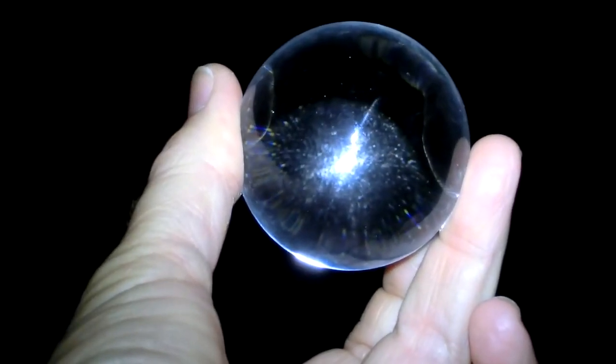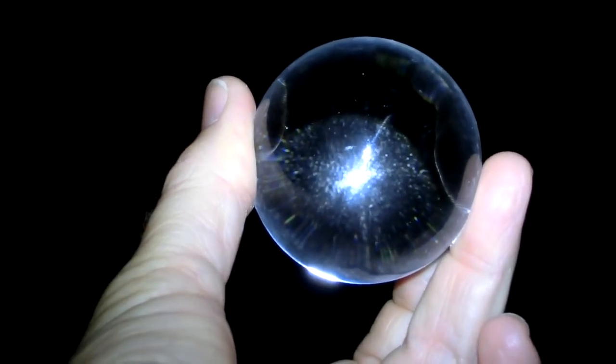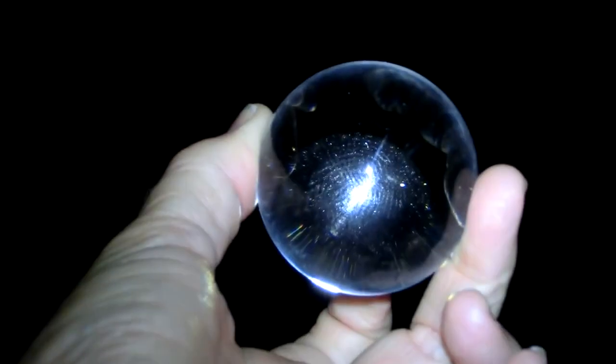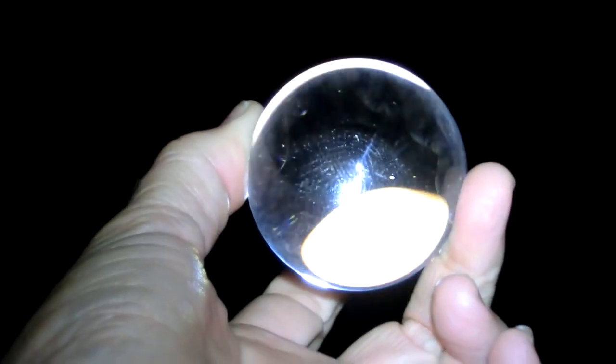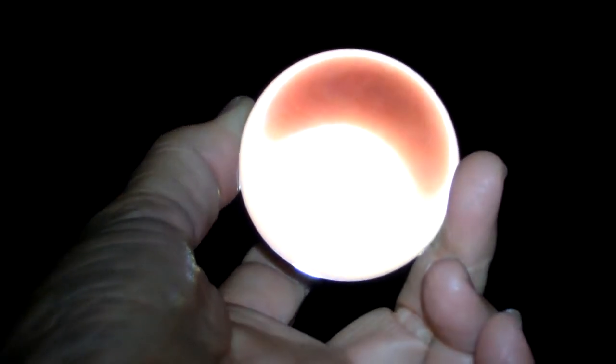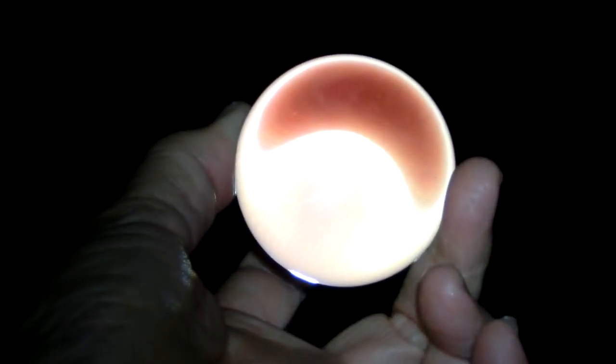Here I'm holding a glass sphere, illuminated the same way as the billiard ball was. Look what happens when I move my finger directly opposite. It becomes retroreflective.